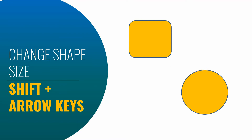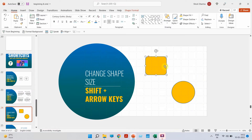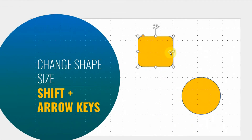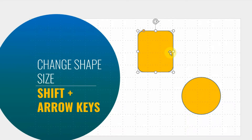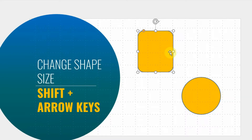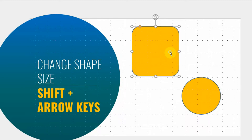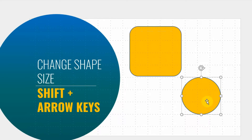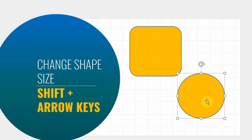Third shortcut: how to change the size of shapes without using your mouse. Click on the shape, hold Shift, and press the arrow keys. Use the up arrow to increase height, the right arrow to increase width, the left arrow to decrease width, and the down arrow to decrease height. Play with all the arrows to see what each does — you can increase or decrease size as per your convenience.